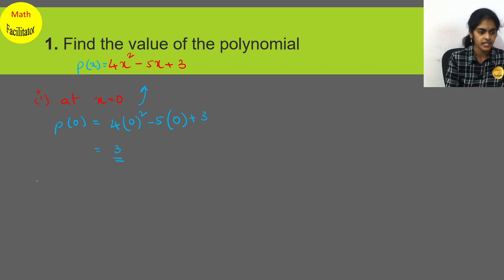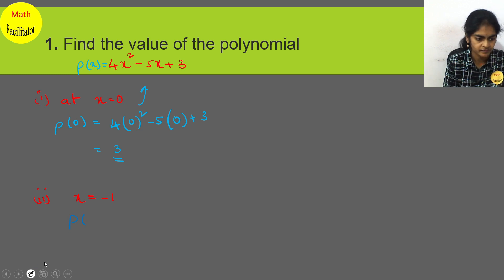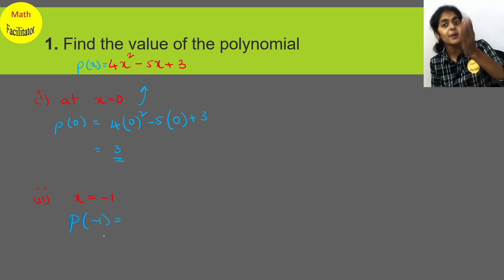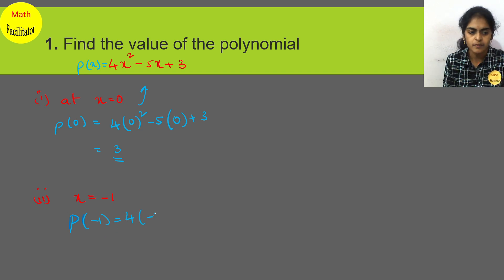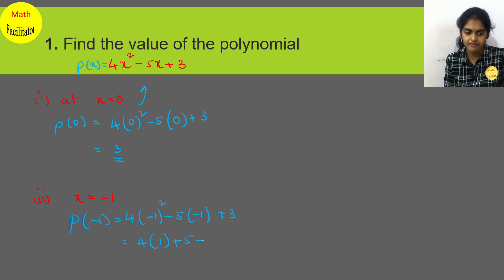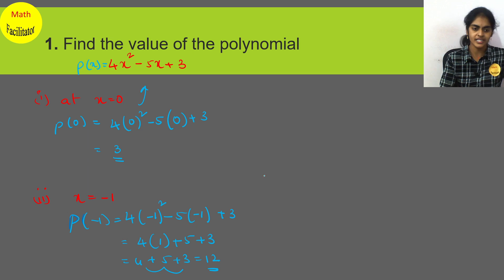Now let's see the next one. You have to find the value of the polynomial at x equal to minus 1, that means p(−1). In the place of x substitute minus 1. So 4 into (−1)² minus 5 into (−1) plus 3 equals 4 into 1 plus 5 plus 3. So 4 plus 5 plus 3 equals 12. So p(−1) is 12.